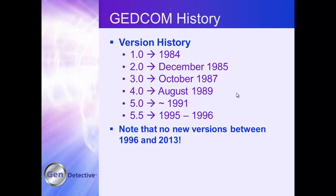By '95, '96, the computer was very firmly entrenched in ways of recording our family history — we recorded our genealogy in it. A lot of the programs we initially used went out of business; they're no longer around. But we were okay because we had that GEDCOM file and could get a lot of our data out and move to a new program. The key point here is: there have been no new enhancements to the specification since 1996.